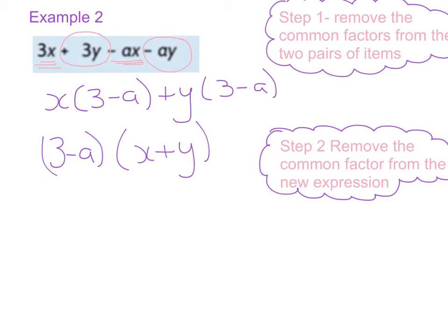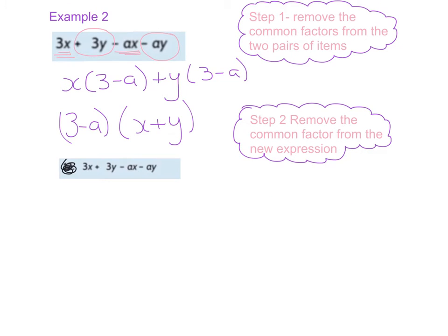Now we'll do this sum again and this time we will take out the 3s in the first one and see if we still get the exact same answer. Okay so you can see I've written the sum down again. And this time I'm going to take out the common factor between the first two and we've got 3x plus 3y. So the common factor here is going to be 3. So it's 3 times x plus y.